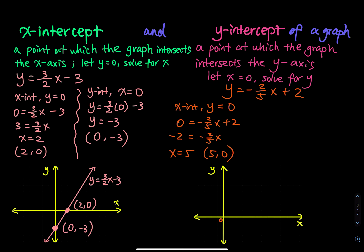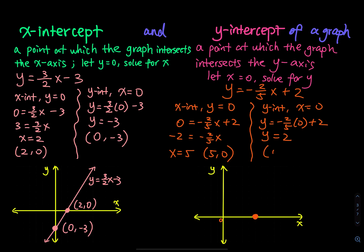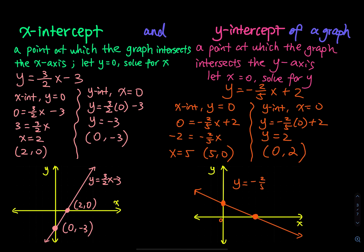The x-intercept is at (5, 0). For the y-intercept, let x equal to 0: y = (-2/5)(0) + 2, giving y equals 2. So the y-intercept is (0, 2). Connect these two points and extend the line to sketch the graph of y = (-2/5)x + 2.